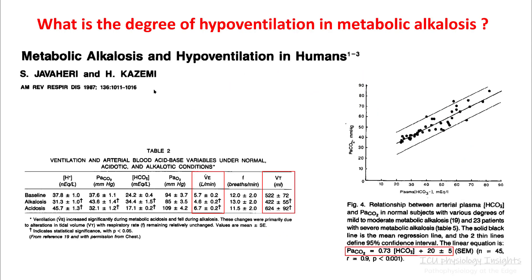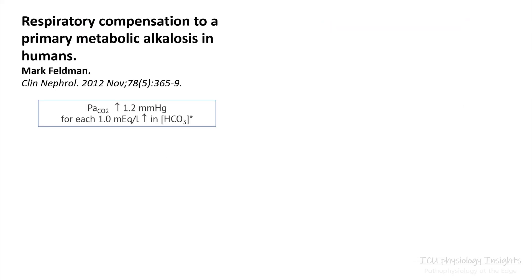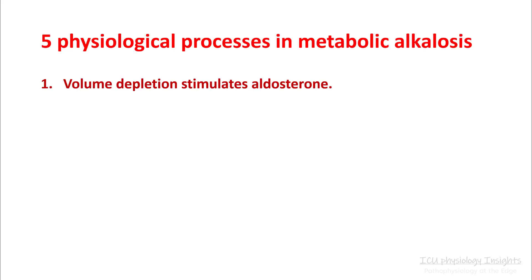Metabolic alkalosis results in hypoventilation, mostly because of a decrease in tidal volume rather than respiratory rate. Your expected pCO2 equals 0.73 times the bicarb level plus 20. In another study, the elevation in pCO2 was 1.2 mmHg for every one rise in bicarb.